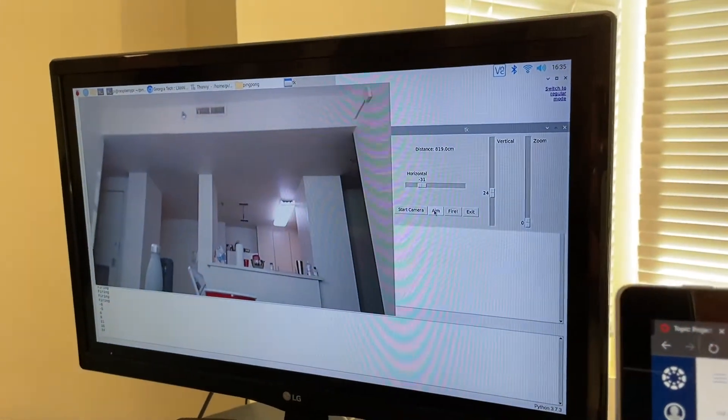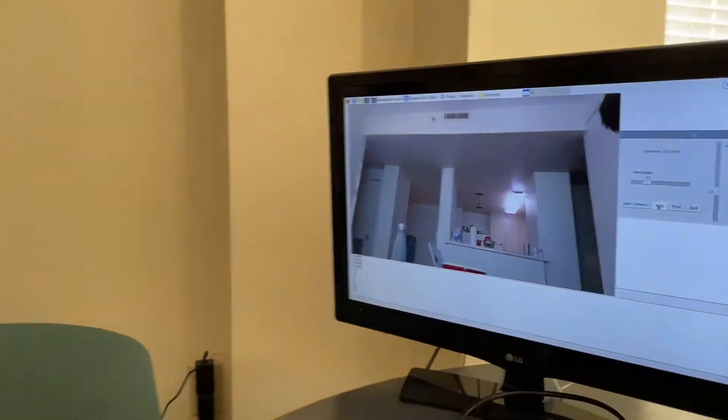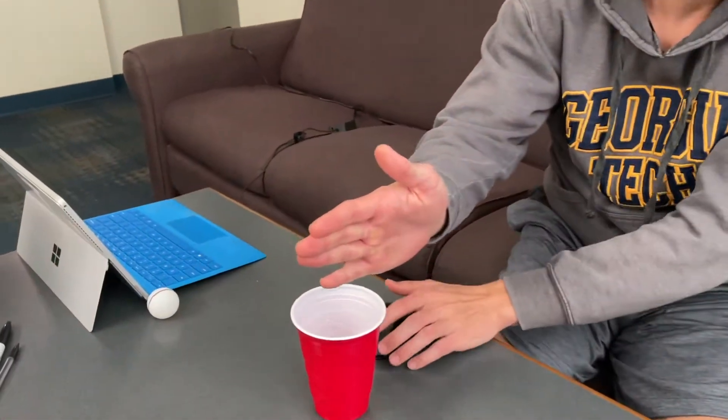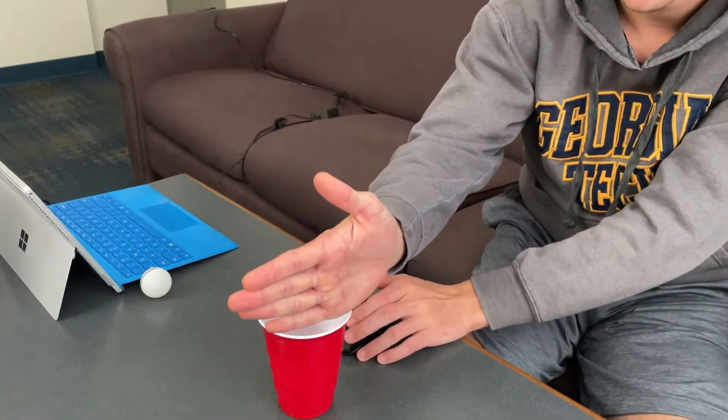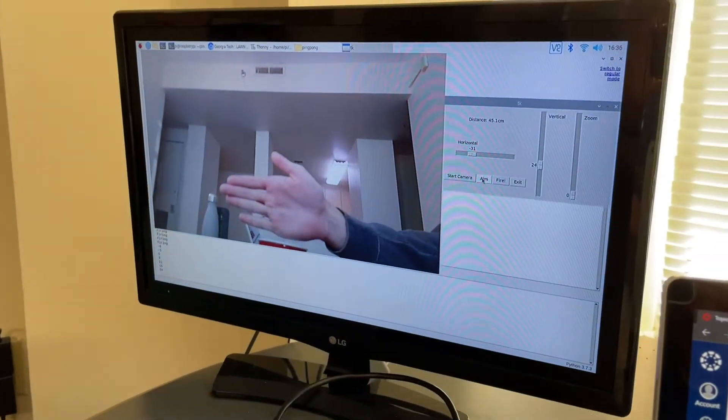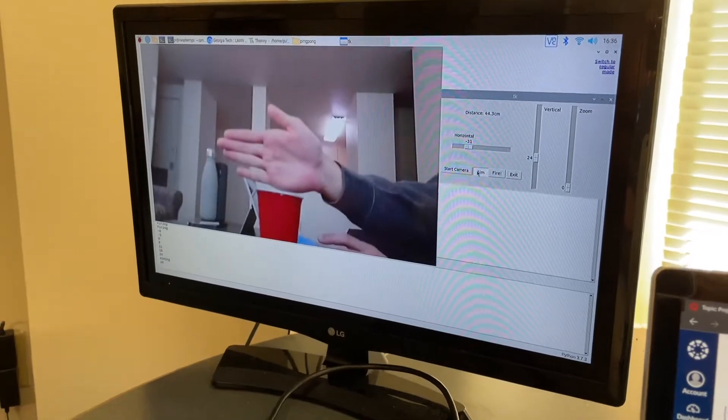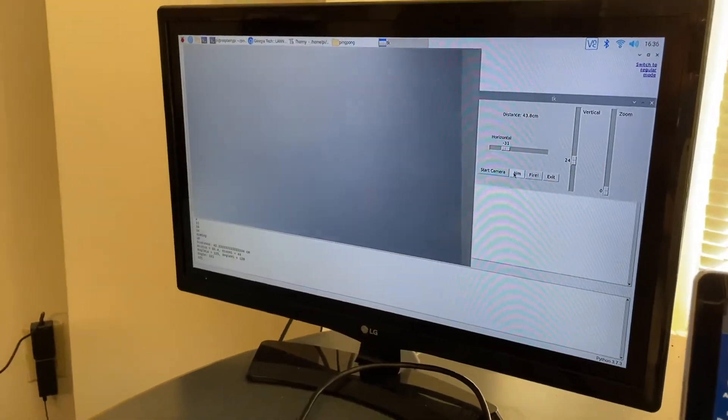And then when you're aiming you put your hand right in front of the edge of the cup that you want the ball to go into, and you hit the aim function and it tilts down and then it aims for you.